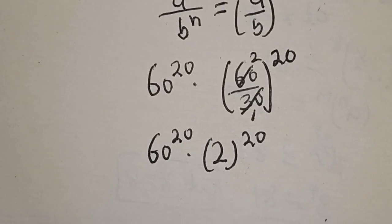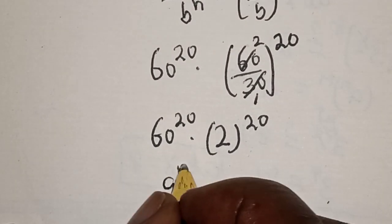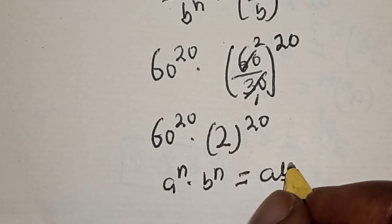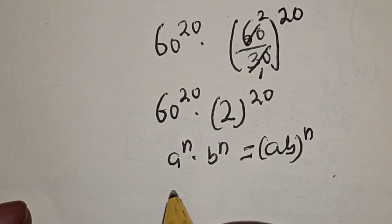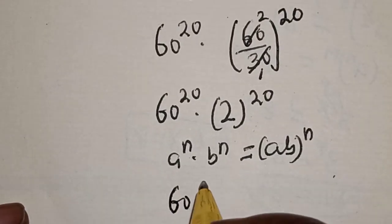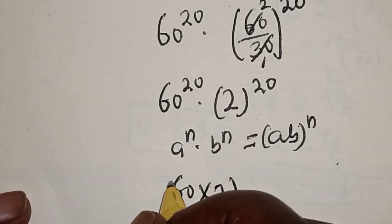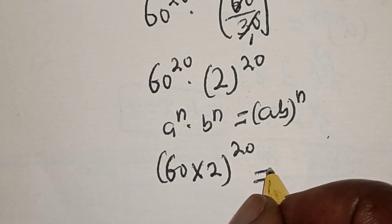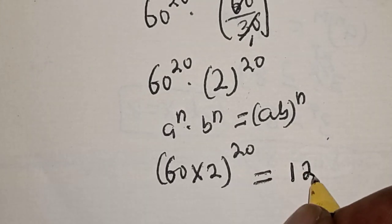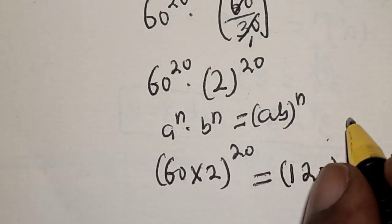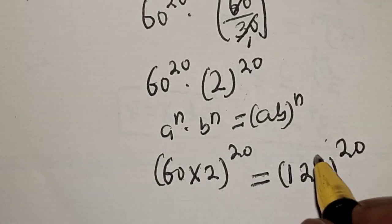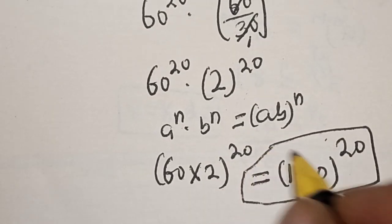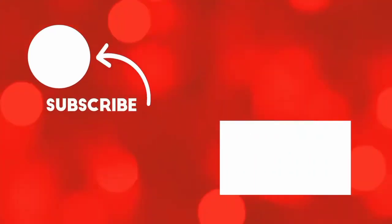Now remember that a raised to power n multiplied by b raised to power n is equal to a times b raised to power n. So this becomes 60 times 2, raised to power 20, which equals 120 raised to power 20. That is our final answer. If you enjoyed the class, please don't forget to like, share, comment and subscribe. Thank you.